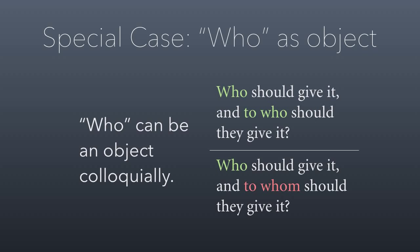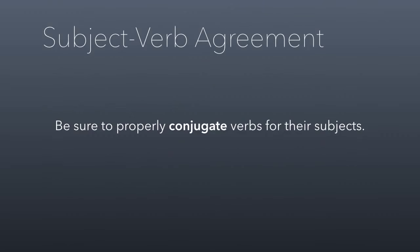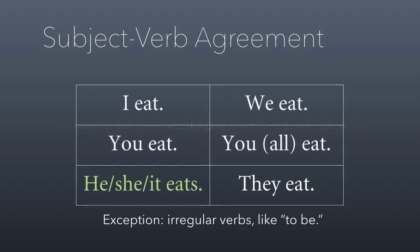That covers pronouns and cases. Next, let's talk about subject-verb agreement. It's important to properly conjugate verbs for their subjects. In English, conjugation is universally very simple — I eat, we eat, you eat, you all eat, he/she/it eats, and they eat. The only time we alter the verb is in the third person singular: he, she, or it. There are exceptions like irregular verbs such as 'to be' — I am, we are, and so forth — but there aren't many of them in English.